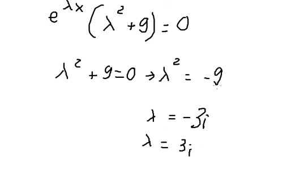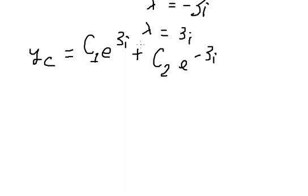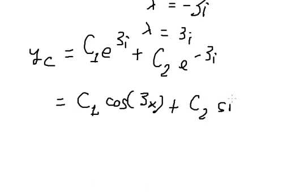Because this involves complex numbers, i squared equals negative 1, that's why we have negative 3i and positive 3i. So yc equals c1 e to the power of 3i plus c2 e to the power of negative 3i. We can write this as c1 cosine 3s plus c2 sine 3s.